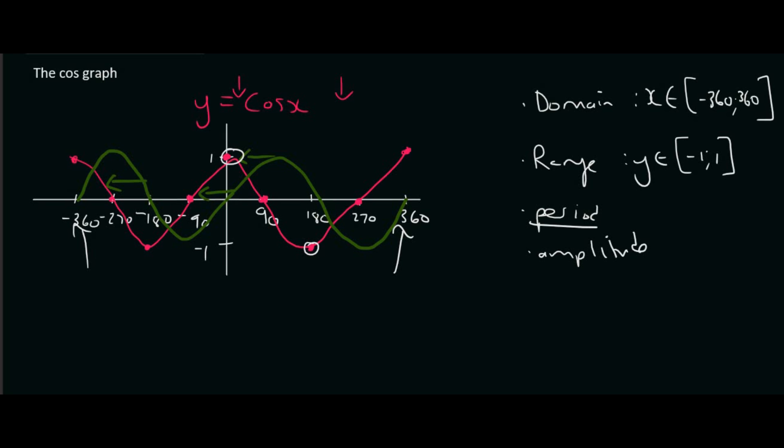The period, now that's just something you need to memorize. For a cos and a sin graph, that's going to be 360 degrees. Next year, in grade 11, that will change. But for this year, it just stays 360 degrees for a sin and a cos.